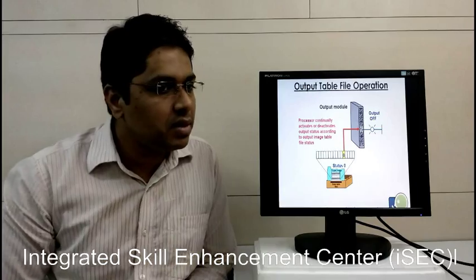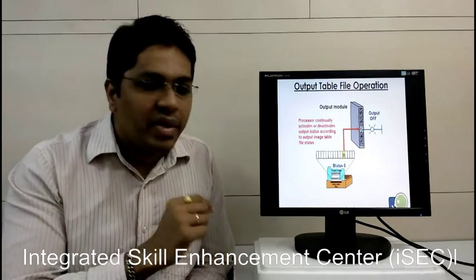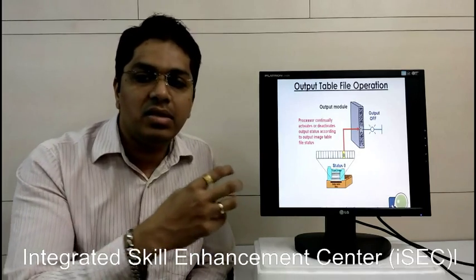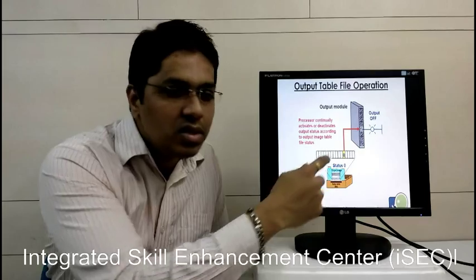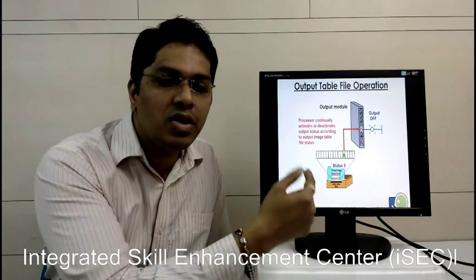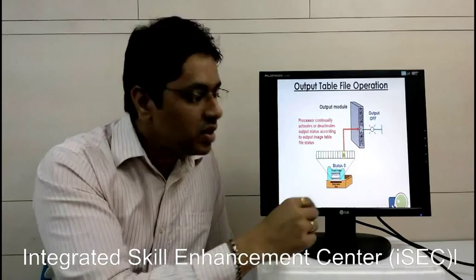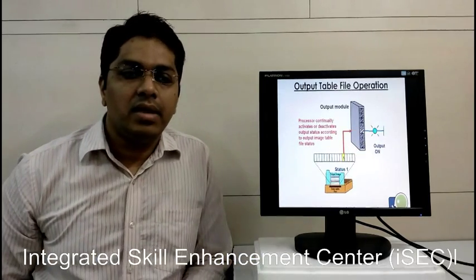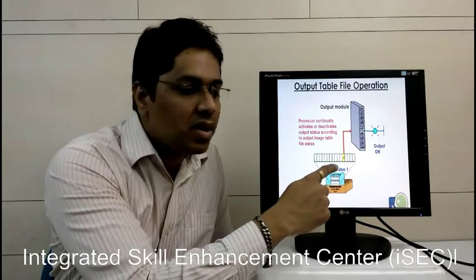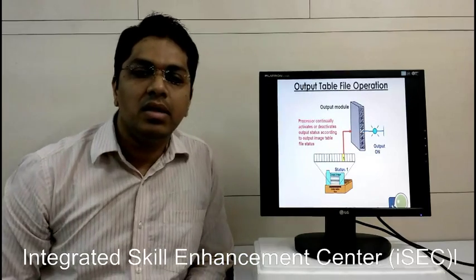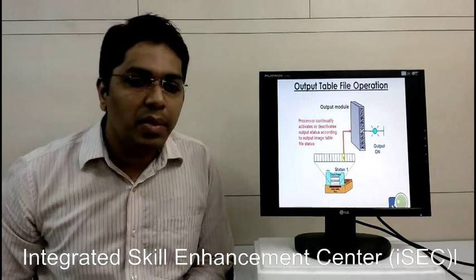Same thing, there is output table file operation. Whenever there is no output, when no decision is taken, as the program is written, when there is 0 as the input of the output, then the output is off, which means 0. Whenever there is a binary stored as 1 in the output table, the output will be turned on and the bulb will be turned on. This is called the input and output table file operation.